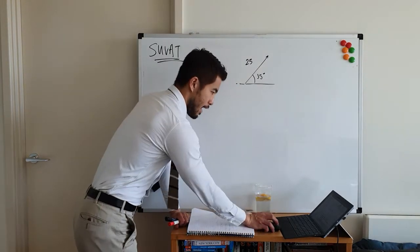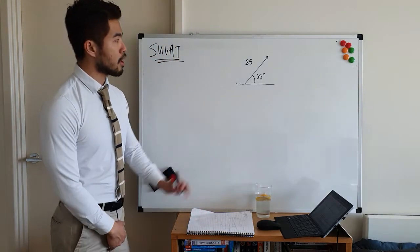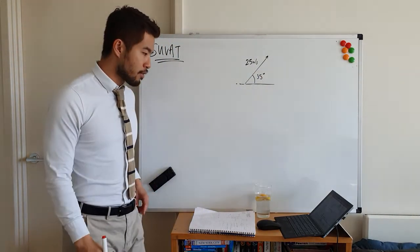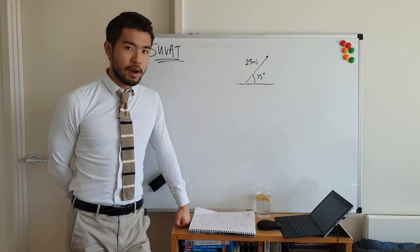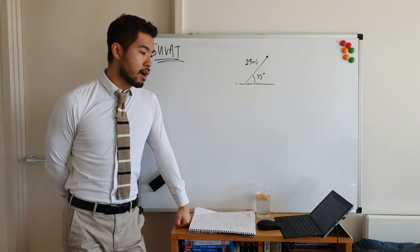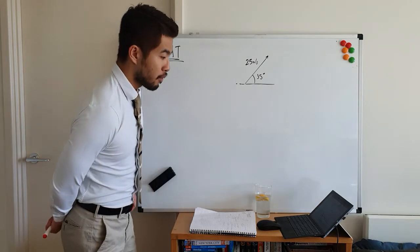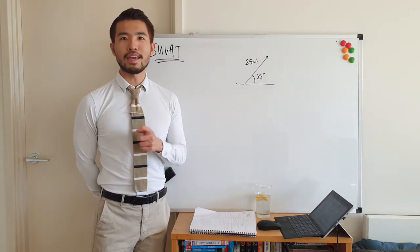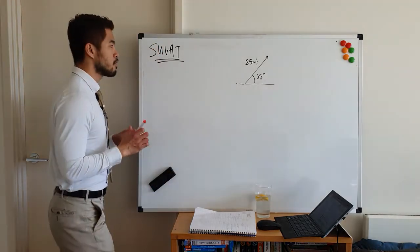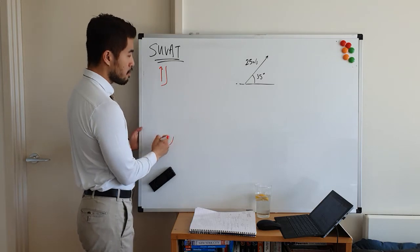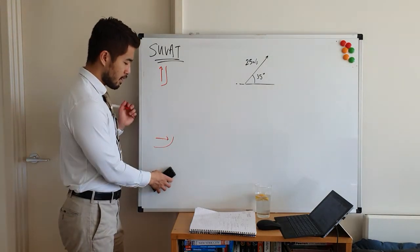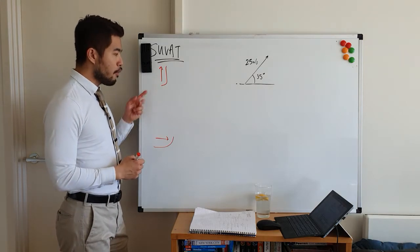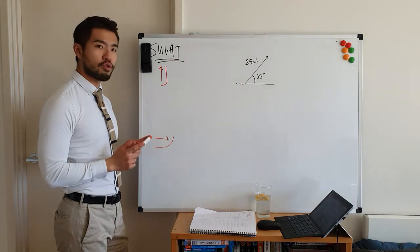Let's start with slide 2. Slide 2 is a projectile traveling at 25 meters per second at 35 degrees, and they're asking you what's the time taken for the projectile to return to the ground. I've also added asking for the horizontal distance travelled. Every single time you do SUVAT, what do you do first? You resolve it vertically and horizontally, because there is only one way linking the vertical and horizontal.